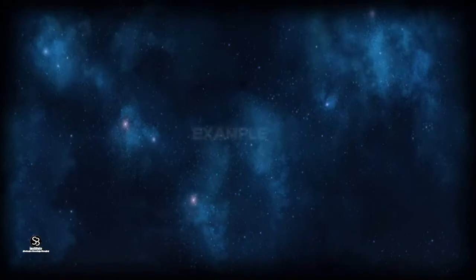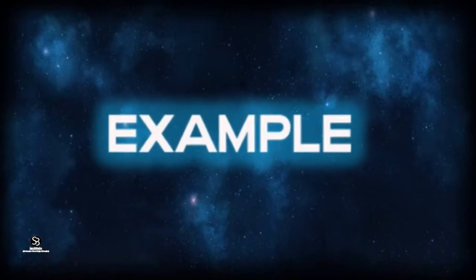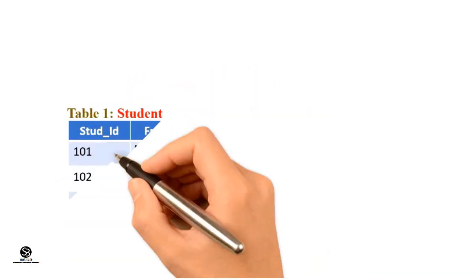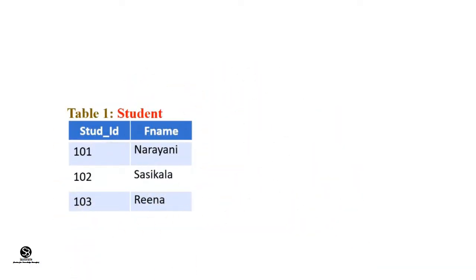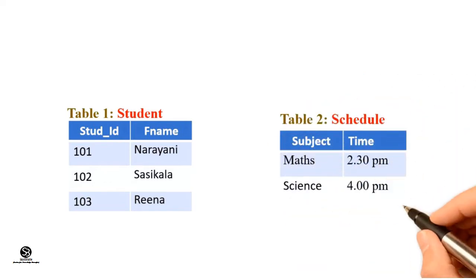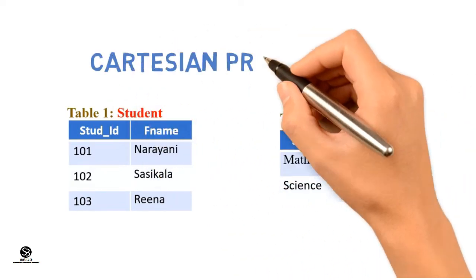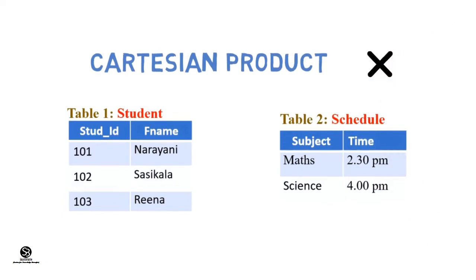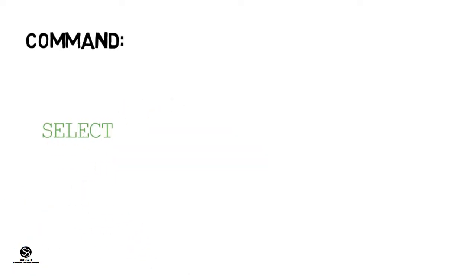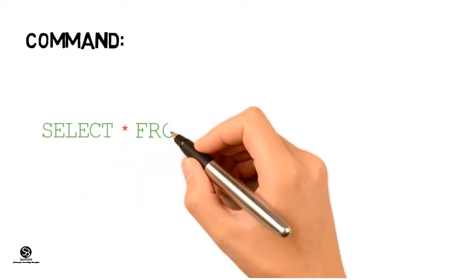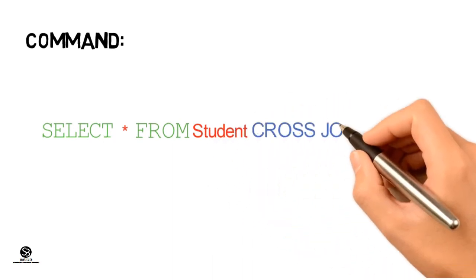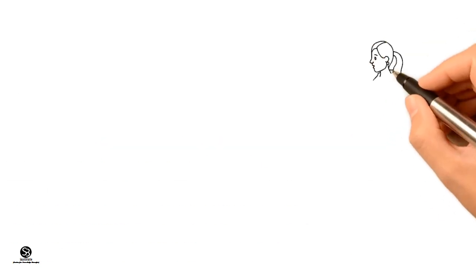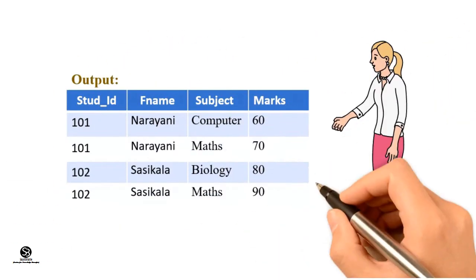There are two tables: Students and Schedule. The teacher wants a detailed report of students with their schedule. This can be implemented in SQL using cross join: SELECT * FROM Student CROSS JOIN Schedule. The output of this table shows all rows from relation Student combined with Schedule.